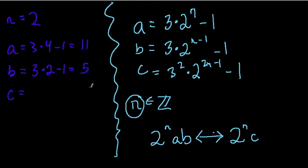And C equals 3 squared, or 9, times 2 to the 2n minus 1. Well, n is 2, so that's equal to 2 times 2, minus 1, which is 3. 2 to the third is 8, minus 1. 9 times 8, 72, minus 1, 71. So now we have everything we need.